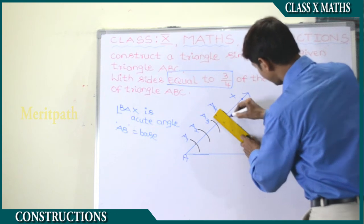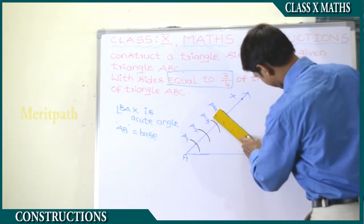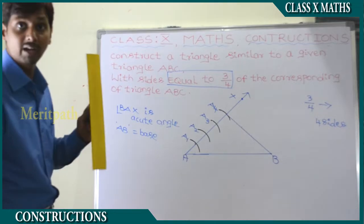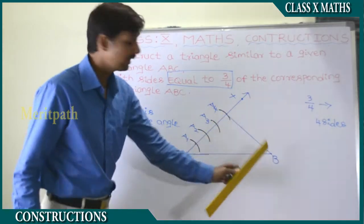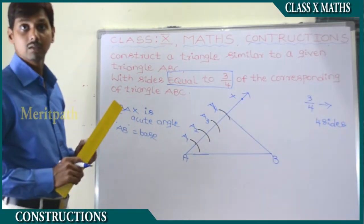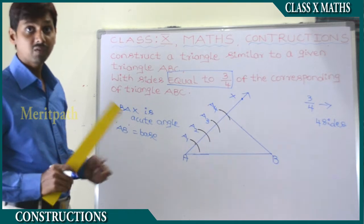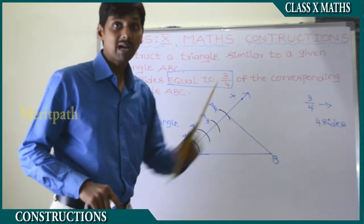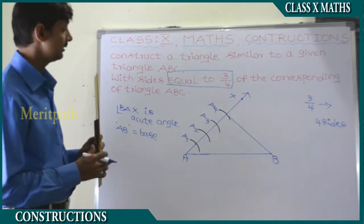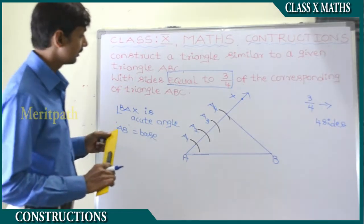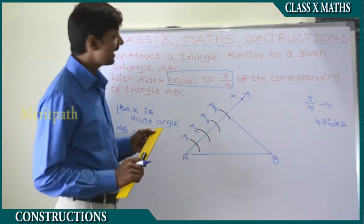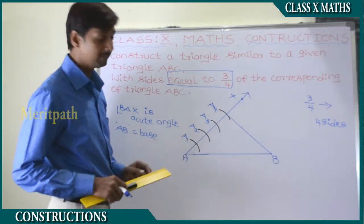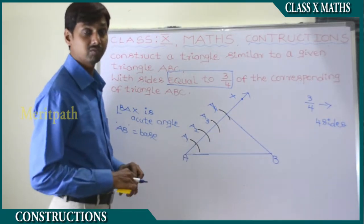We are joining A4 and B here. A4 and B is joined. So now we need to find out — we need to take three parts which should be divided separately. So for that, let's draw a parallel line for B, A4 — that's nothing but A4, B. So to draw a parallel line for this.